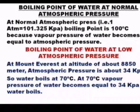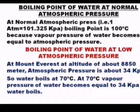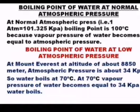The normal boiling point of water is 100 degrees Celsius. In mountains, atmospheric pressure is less than 1 atm, so boiling starts below 100 degrees Celsius. For example, at Mount Everest, at an altitude of about 8,850 meters, atmospheric pressure is about 34 kilopascals.